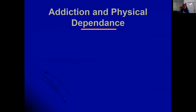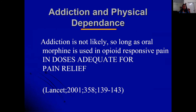The biggest fear is that morphine causes addiction — a notion many learn from pharmacology textbooks. Multiple studies have shown that addiction is not likely as long as oral morphine is used for opioid-responsive pain in doses adequate for pain. A study from Kerala in 2001 examined over a thousand patients receiving morphine and found addiction was not an issue. A very small number may have dependence issues, but for the majority it is not a problem when used appropriately.